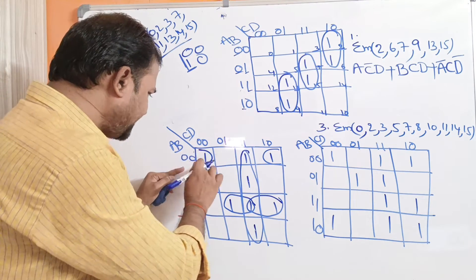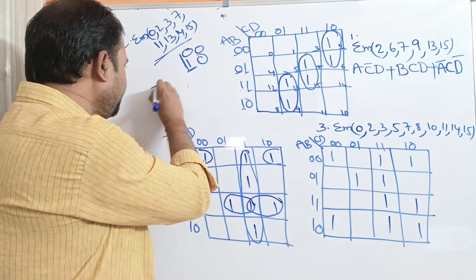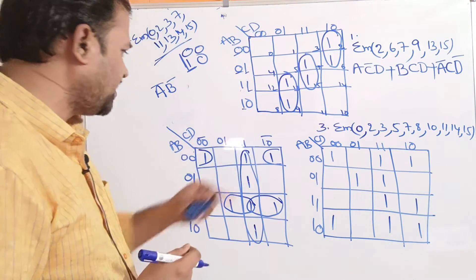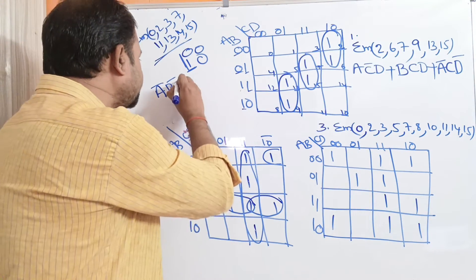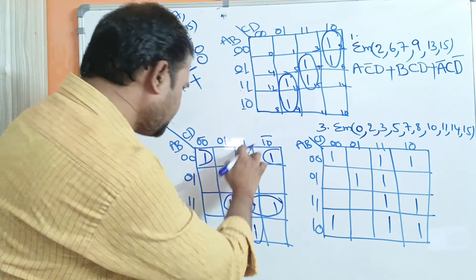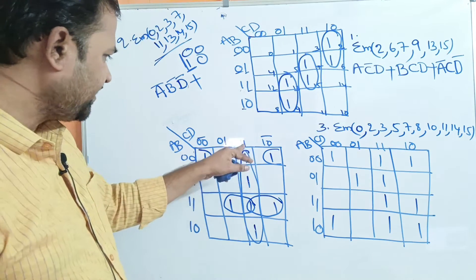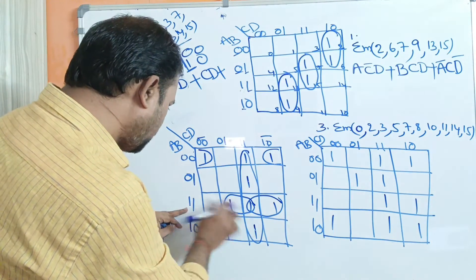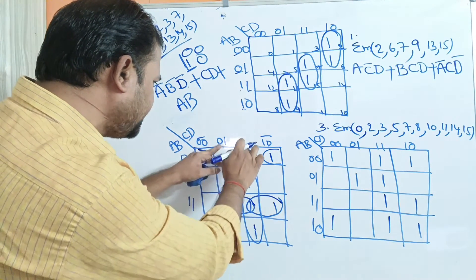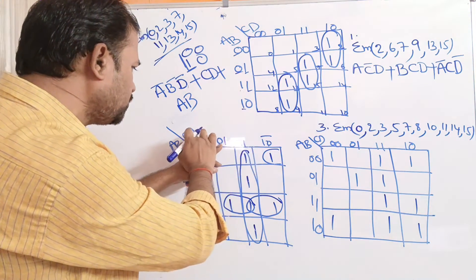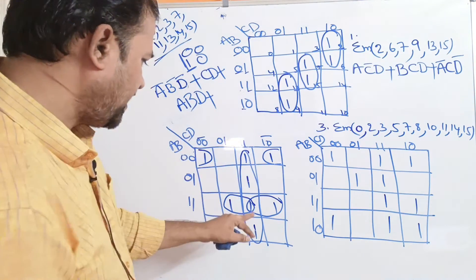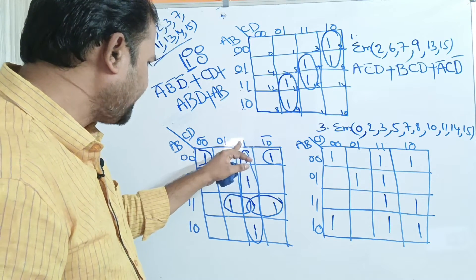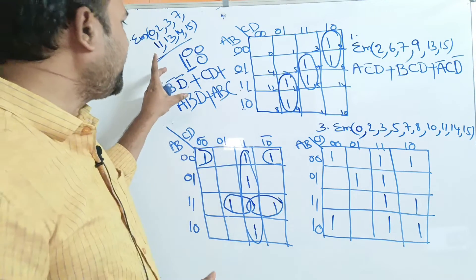Let us write the expressions. The pair 0000 gives A-bar B-bar. The pair where the second zero (D) is common gives D-bar. The group with value 11 for CD gives C D. For the two-cell group, AB is 11 giving A B, and the common second value is D, so we get A B D. Finally, the cells with first common value C give A B C. So the simplified expression is A-bar B-bar + D-bar + C D + A B D + A B C... condensed as: A-bar B-bar + D-bar + C D + A B C.